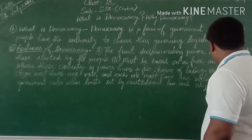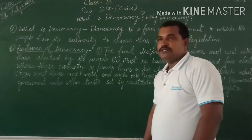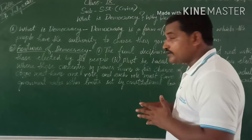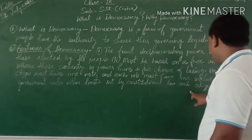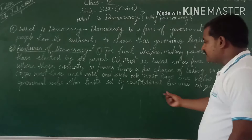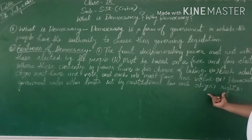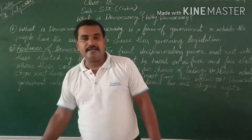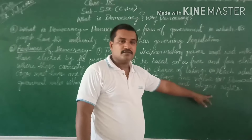The fourth feature is: a democratic government rules within limits — it must respect certain basic rights of citizens. There are seven such rights. Clear?